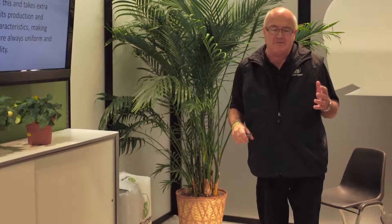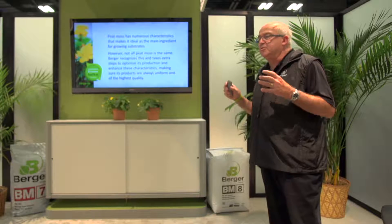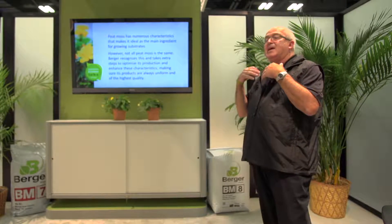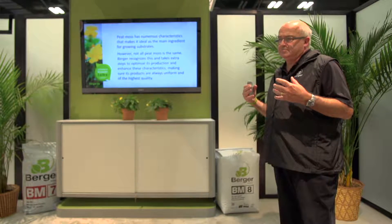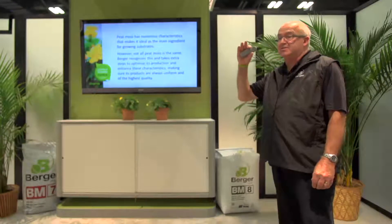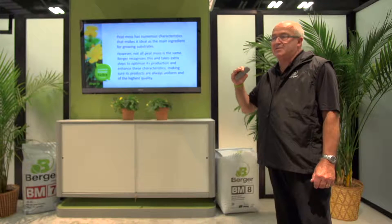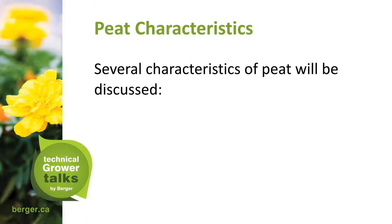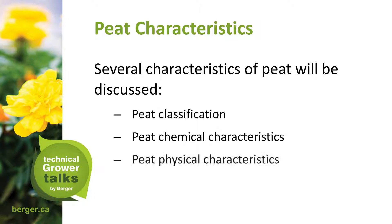When we say that all peat moss is not the same, we mean it differs in classifications — whether it be a sedge peat or a sphagnum peat. Even among sphagnum peats, not all are the same because of decomposition. A good surface-active peat with hardly any decomposition has optimum characteristics for porosity, stability, and integrity. Once it starts to decompose and particles get smaller, it becomes lower quality peat. Several characteristics will be discussed: peat classification, chemical characteristics, and physical characteristics.